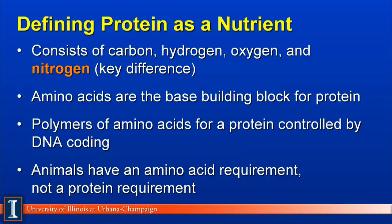We have to understand amino acids are the basic building block. We hook amino acids together in polymers and they therefore form a protein. That sequencing of amino acids is controlled by DNA transcription and RNA. So animals really have an amino acid requirement — that is what is absorbed. Amino acids are built together to form such things as milk protein, S-casein, or muscle in meat animals.